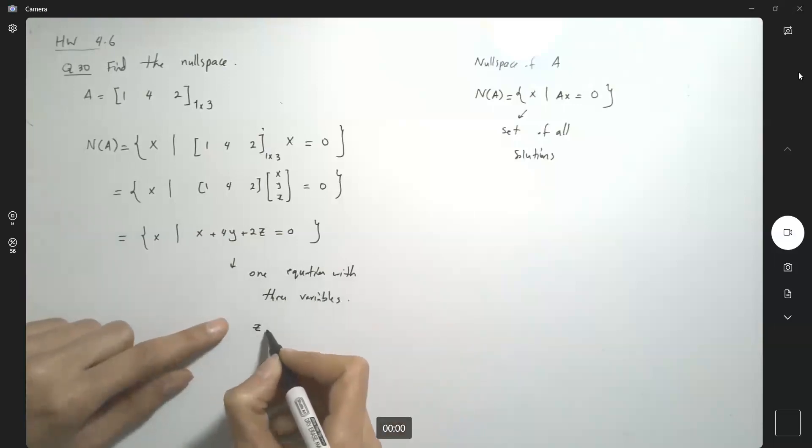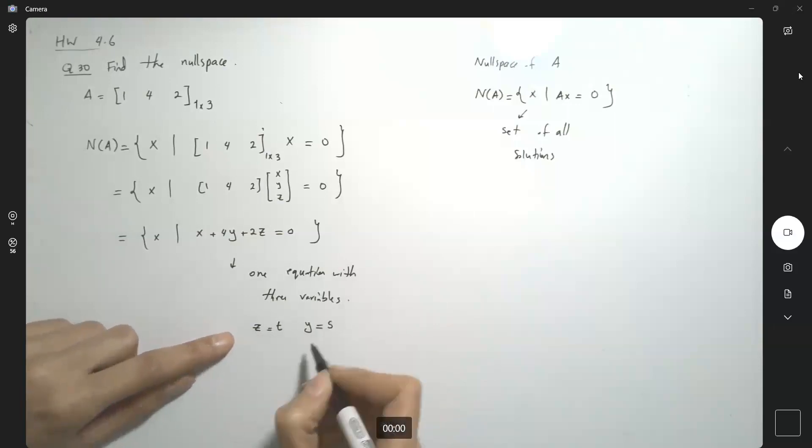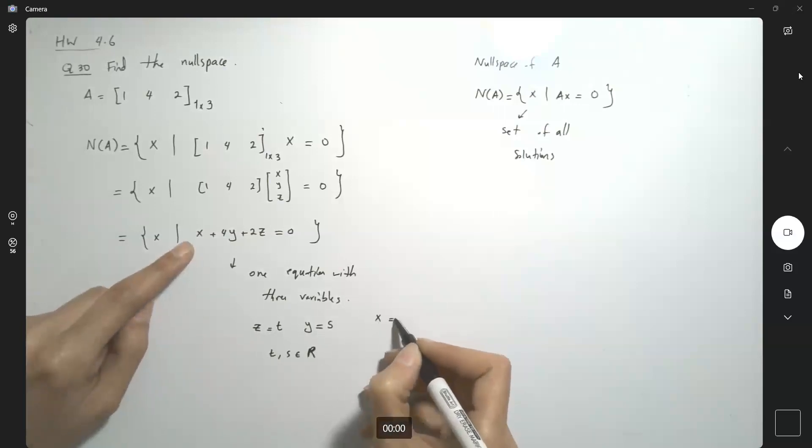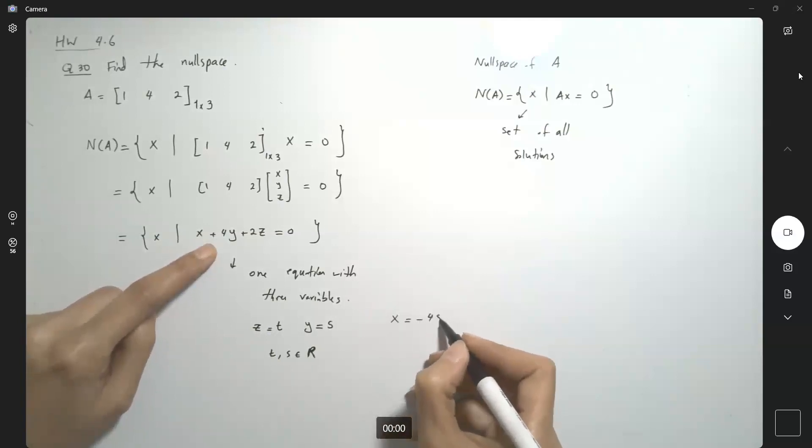Let z be, for example, t and y be s. T and s are both real numbers. So we can write x equals to, let's just write this down in order, negative 4s minus 2t.